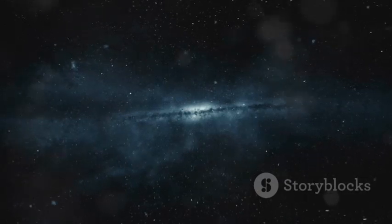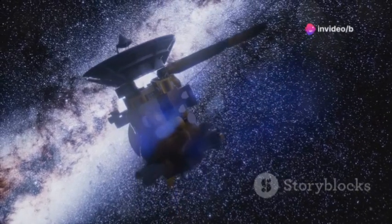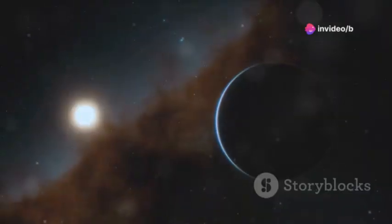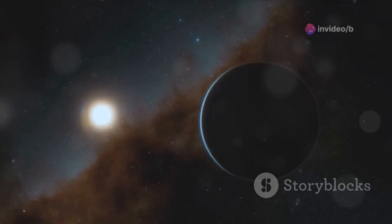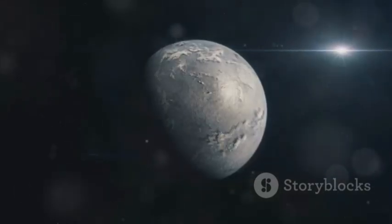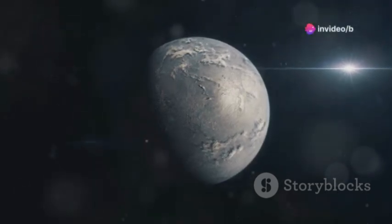Now what makes Alpha Centauri so intriguing to us space enthusiasts? Let's zoom in on Proxima Centauri. Not only is it the closest of the trio, but it also hosts an exoplanet named Proxima b. This rocky planet orbits within the star's habitable zone, where temperatures could allow for liquid water to exist.